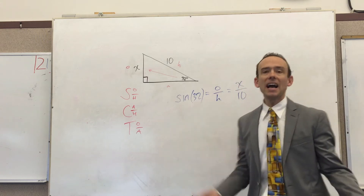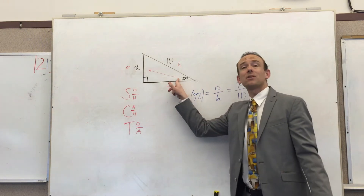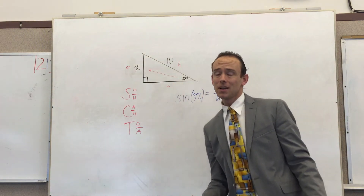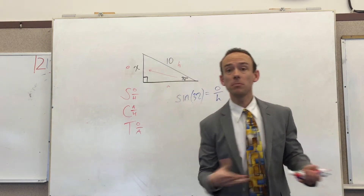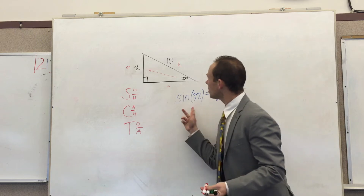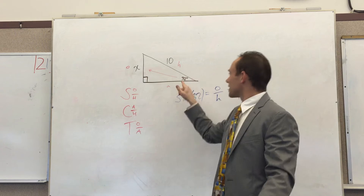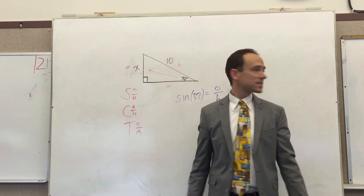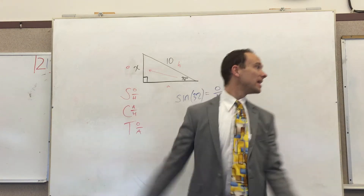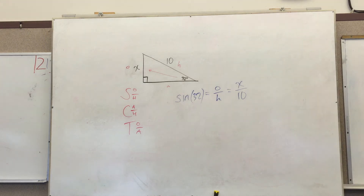Now, sine of 32° is a fixed value — every right triangle with a 32° angle is similar, and in similar shapes the ratio of sides is always proportional. So we know what this ratio is. Maybe we measured it once with a different 32° right triangle. What it is today it will be tomorrow — but I didn't bring a calculator so hang on.